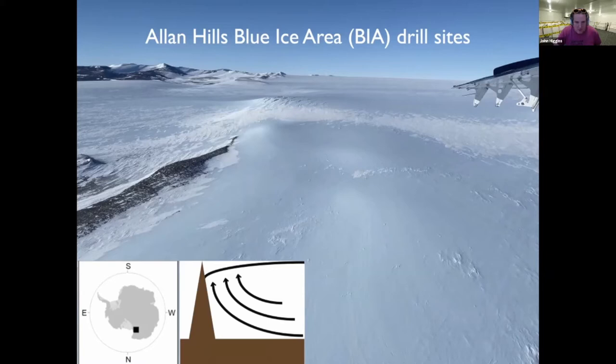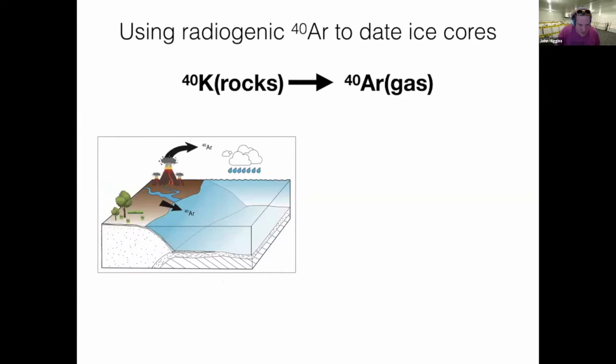I wanted to cover one more topic: how we actually date these ice cores. We've gone to Antarctica and decided to drill ice cores in places where old ice may be pushed towards the surface. But that comes with complications because the ice is no longer a well-ordered book — it's like somebody has taken out all the pages, torn them up, and cast them asunder. The chief way to put them back together is to figure out how old the ice actually is, and we do that by measuring an aspect of the air trapped in that ice.